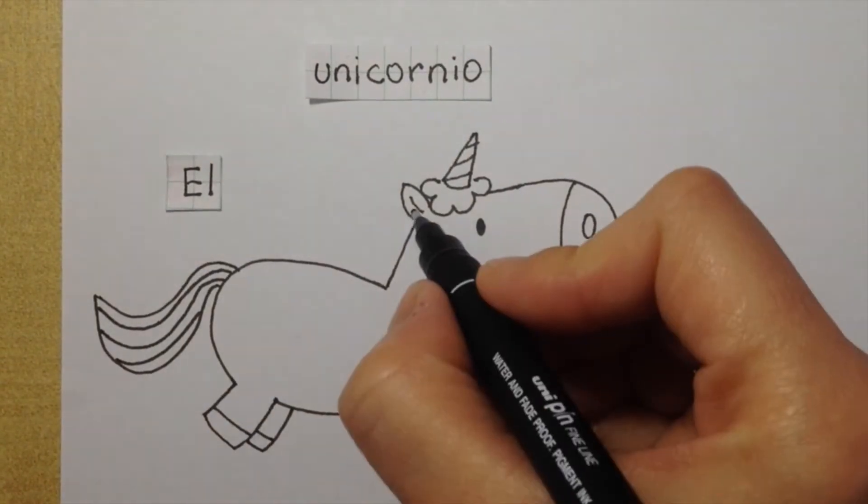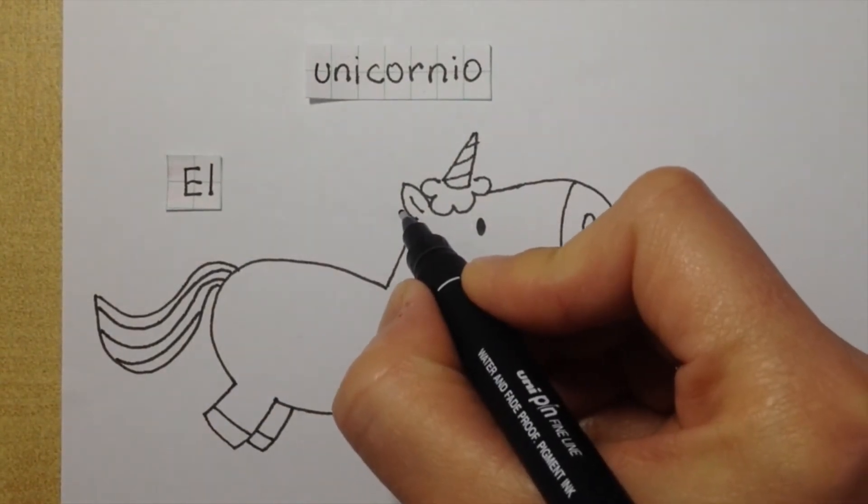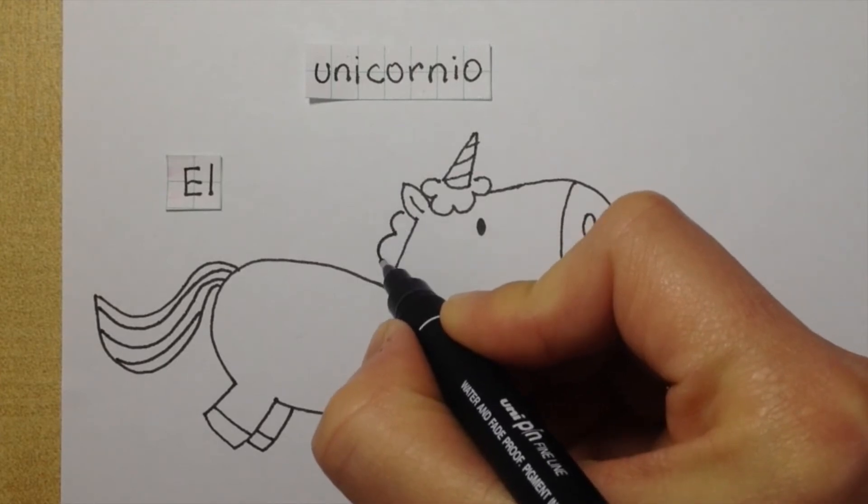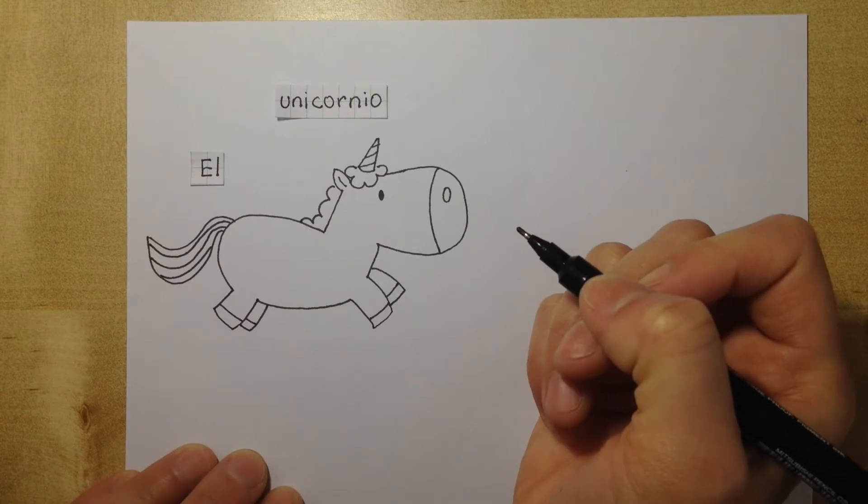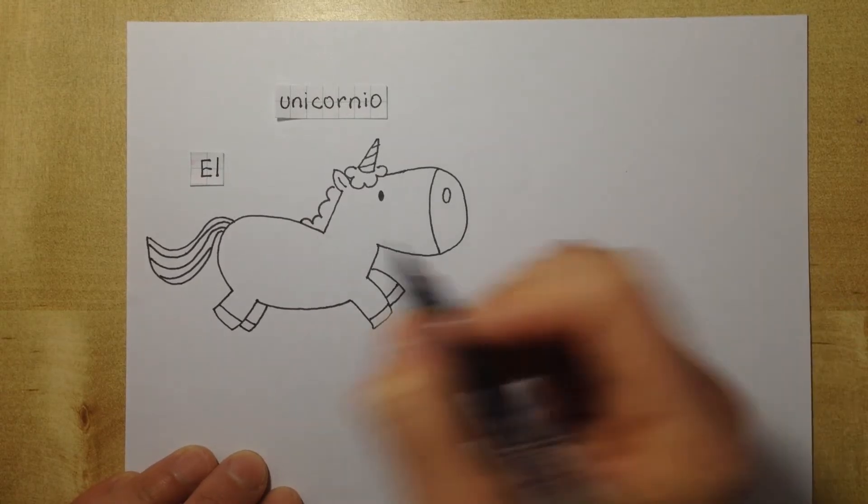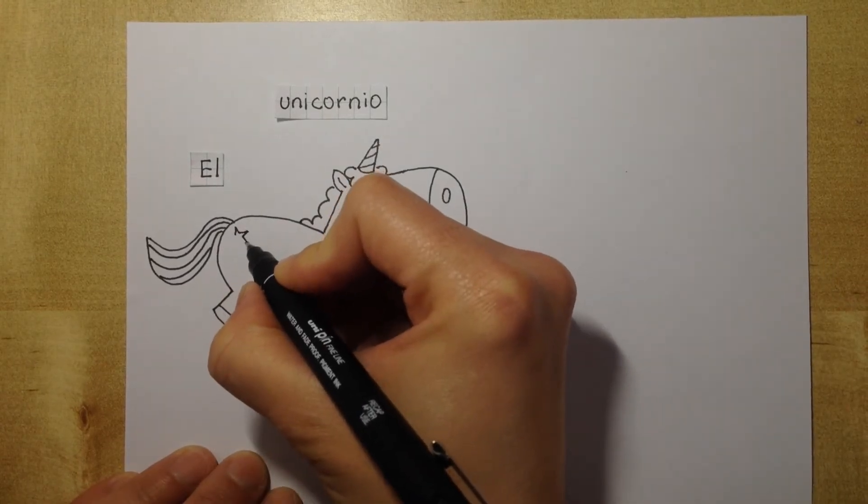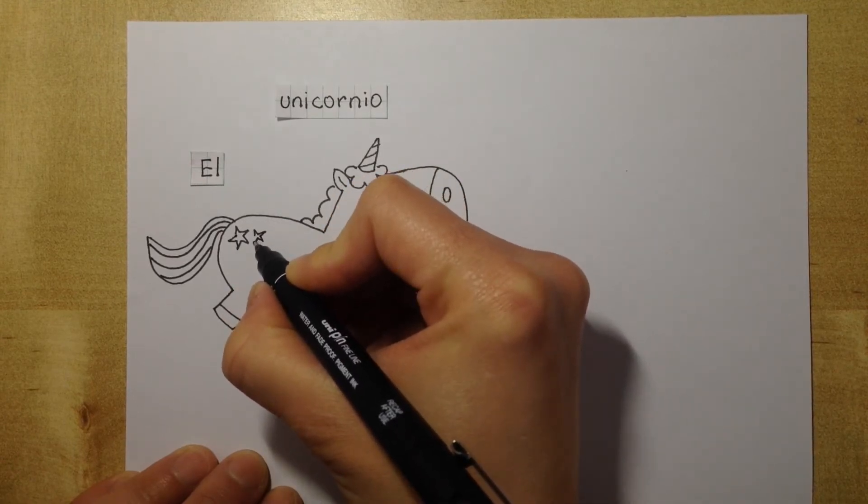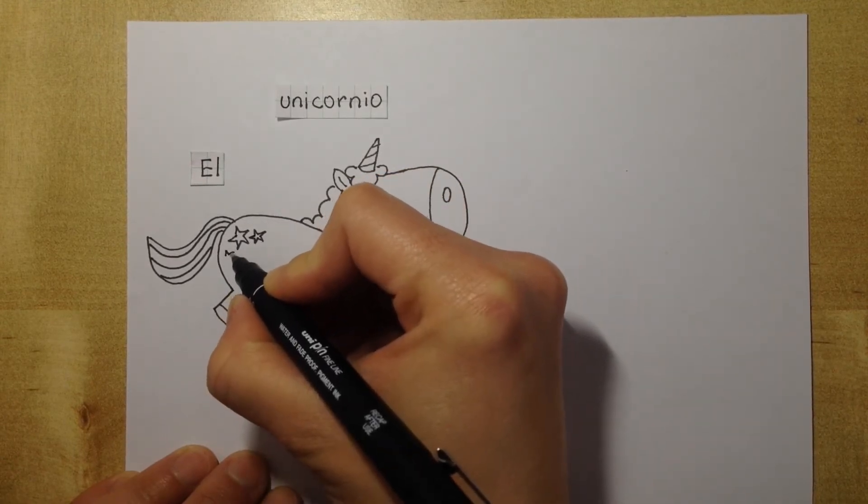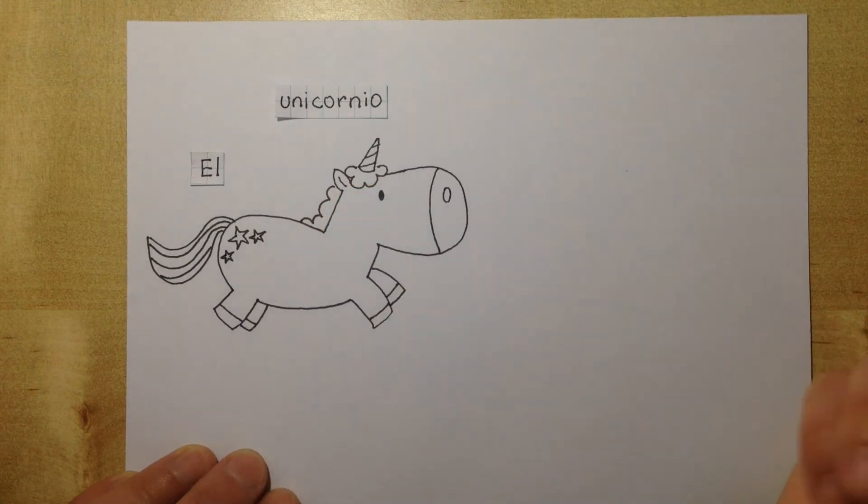Then we do the hair on the back next to his ear and you can add some details. In this case I made some stars but you can make hearts, cupcakes, rainbows, clouds, anything you like.